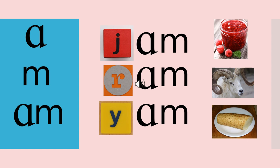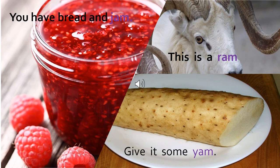A - M - Am. J - Am - Jam. R - Am - Ram. J - Am - Yam. Again: J - Am - Jam. R - Am - Ram. J - Am - Yam. Let's read: You have bread and jam. This is a ram. Give it some yam. Again: You have bread and jam. This is a ram. Give it some yam.